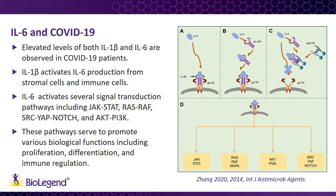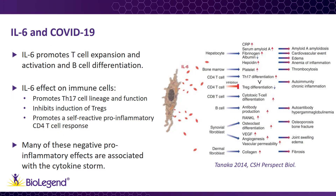Through the activation of various pathways, including the JAK-STAT, RAS-RAF, SRC-YAP-NOTCH, and the AKT-PI3 kinase pathways, IL-6 is able to promote biological functions including proliferation, differentiation, and immune regulation, among others. In these ways, IL-6 is able to promote T-cell population expansion and activation, as well as B-cell differentiation. IL-6 has a number of effects on T-cells, including promoting TH17 cell lineage and function, and the development of self-reactive pro-inflammatory CD4 T-cell responses. It can also inhibit the induction of T-regs that could dampen an immune response, and this effect is thought to be a reason for the major deleterious effects observed in the case of cytokine storms.